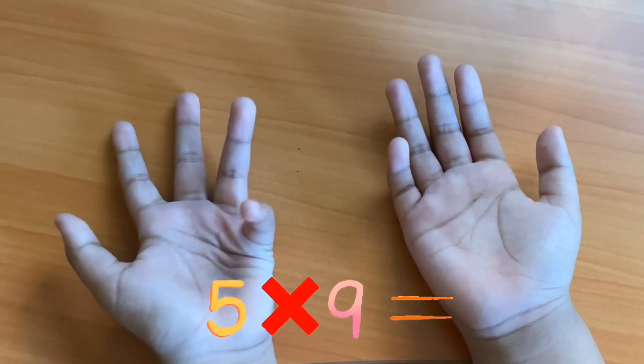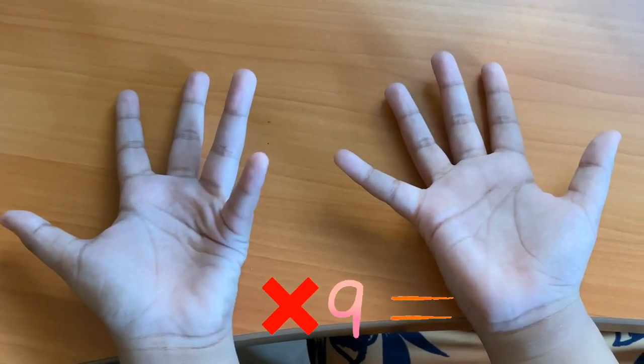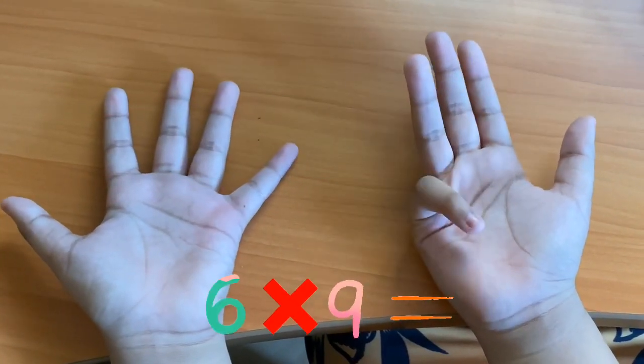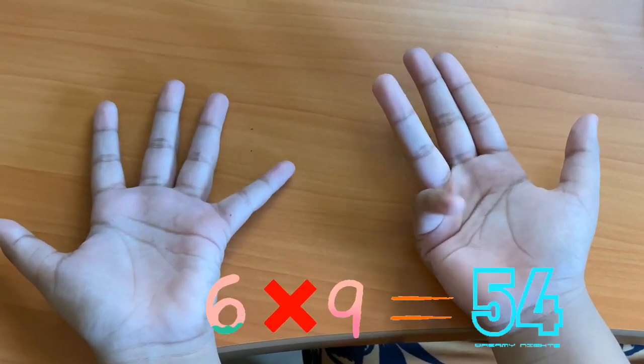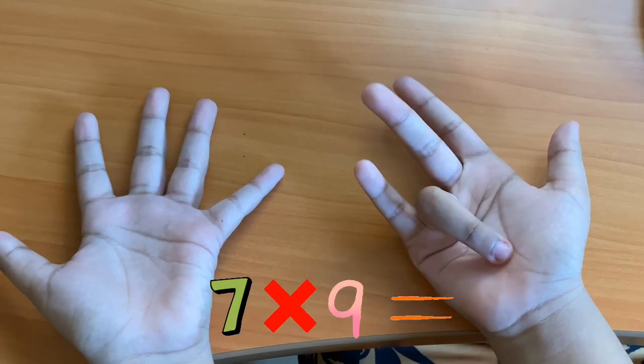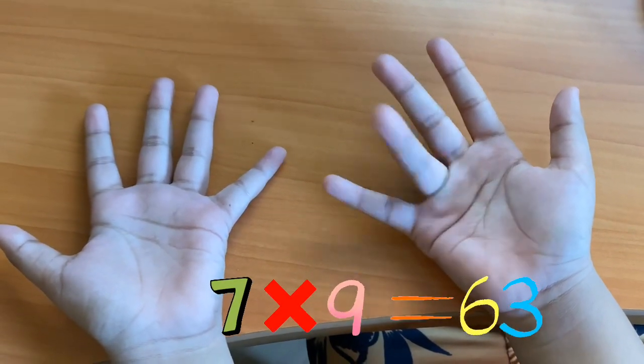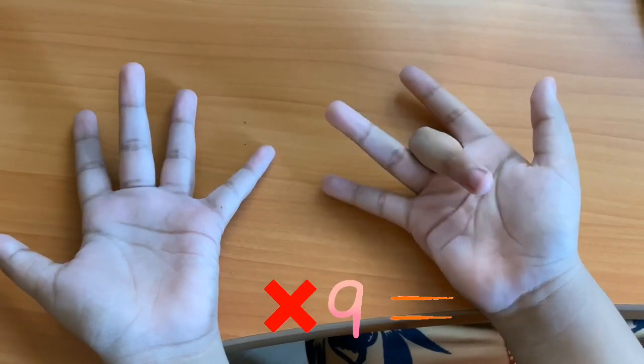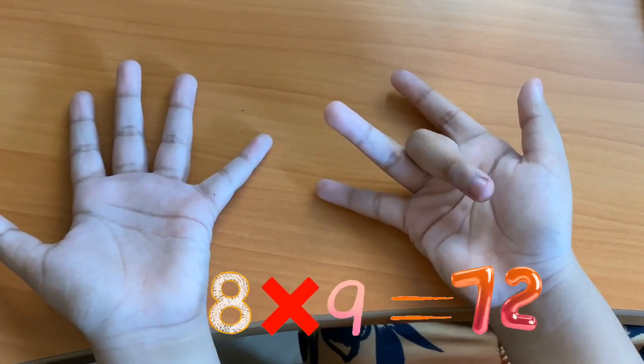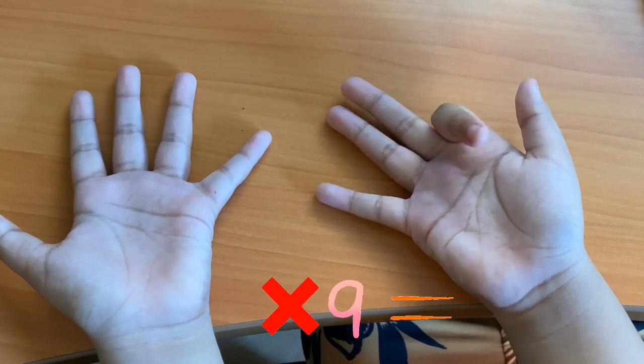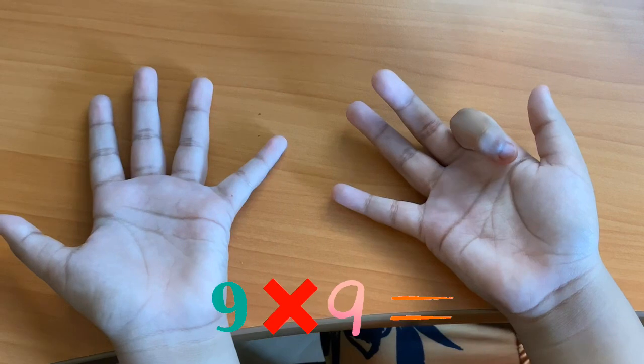5 times 9 equals 45. 6 times 9 equals 54. 7 times 9 equals 63. 8 times 9 equals 72. And the last one is 9 times 9 equals 81.